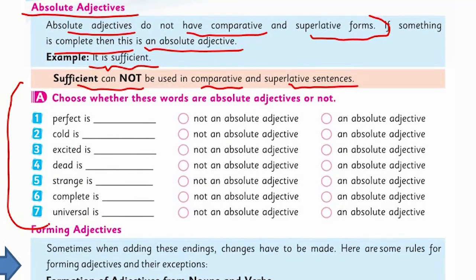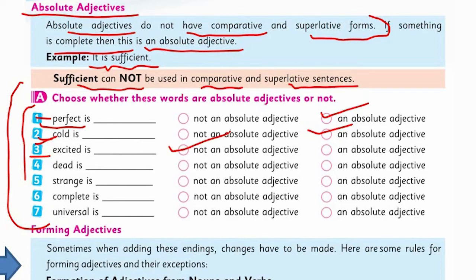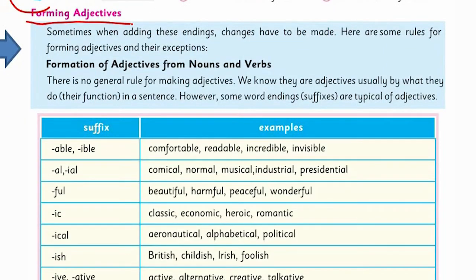In Section A, you have to choose the correct option — whether these adjectives are absolute or not absolute. 'Perfect' is, as I told you in the example, an absolute adjective. 'Cold' has no comparative and superlative degree, so it's an absolute adjective. 'Excited' is not an absolute adjective because we have a comparative and superlative degree of it. 'Dead', as I told you, is an absolute adjective — it has no comparative and superlative degree.